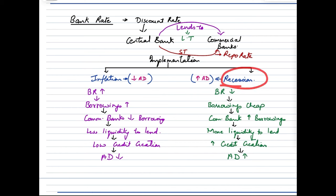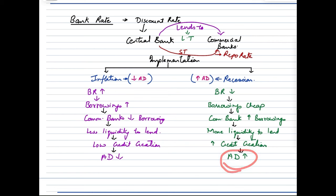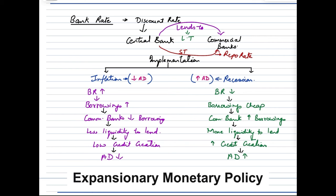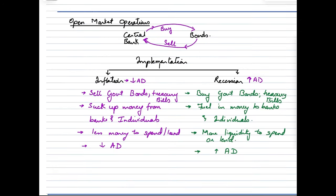On the flip side, if there is a recession or slowdown, the central bank would want to increase aggregate demand. It would bring down the bank rate or discount rate. When the discount rate goes down, borrowing by commercial banks becomes cheaper, so they borrow more. Commercial banks then have more liquidity to loan out to businesses and individuals, increasing credit creation and spending in the economy, causing aggregate demand to rise. The inflation scenario represents contractionary monetary policy, and the recession scenario represents expansionary monetary policy.